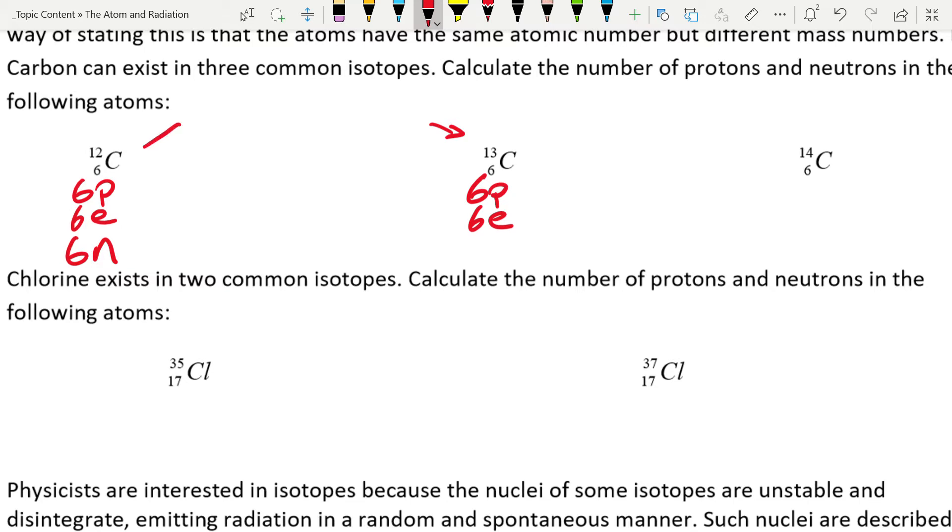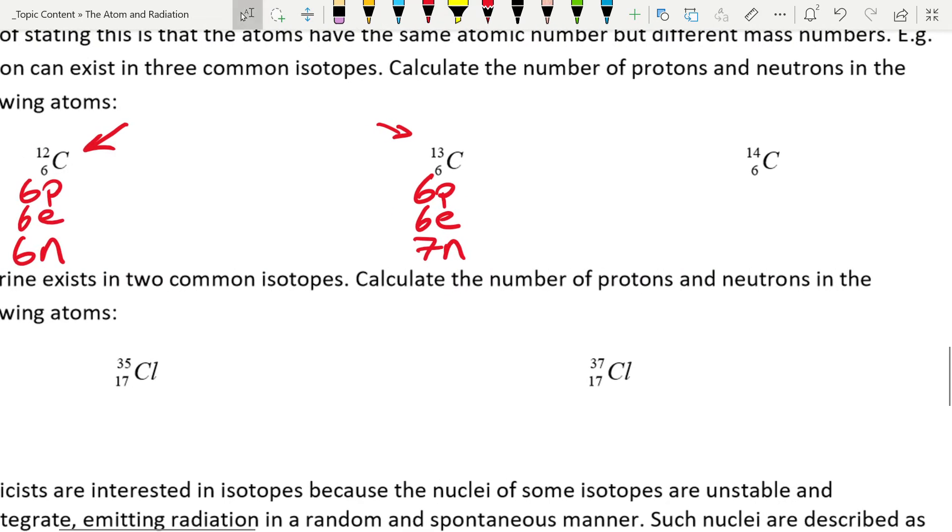These two atoms will be identical in every single way apart from this has one more neutron in the nucleus. That just makes that atom slightly heavier, so it has slightly more mass—hence the bigger mass number—but it doesn't actually change anything about it chemically.